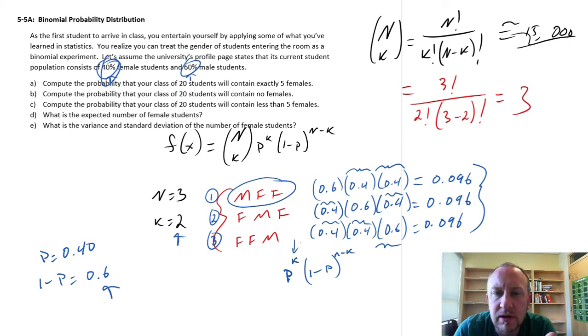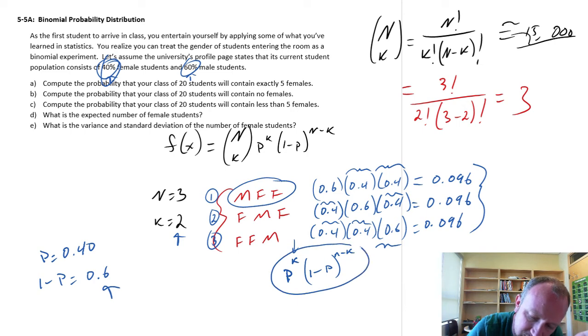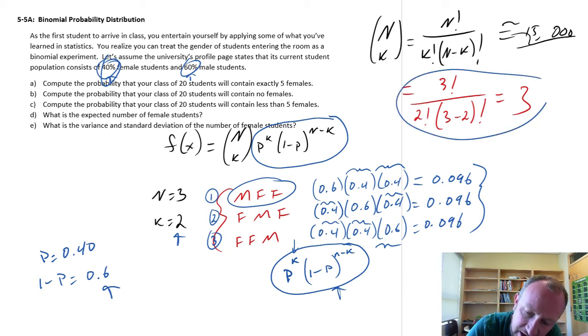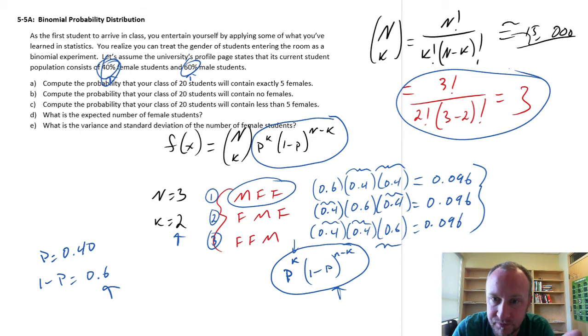So now we have our probability associated with each experimental outcome, which as you can see is exactly what we have here in our general formula. So this is the probability associated with each experimental outcome. This is the number of possible experimental outcomes that we can achieve given those parameters. I have three and I'm choosing two.